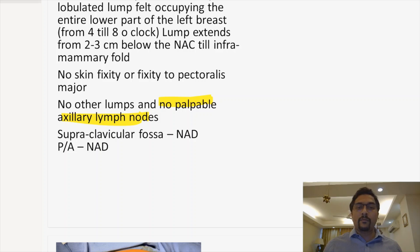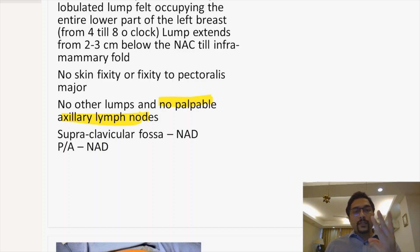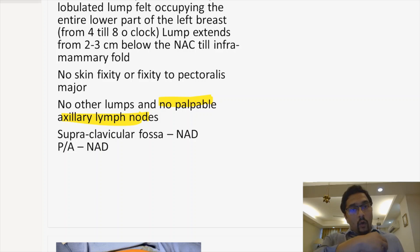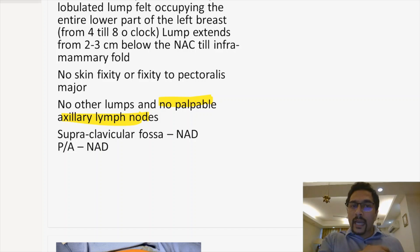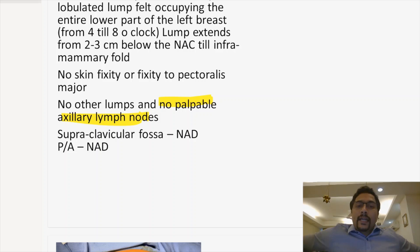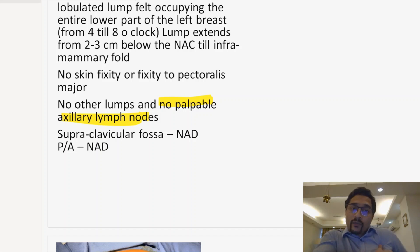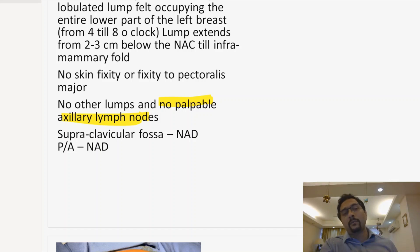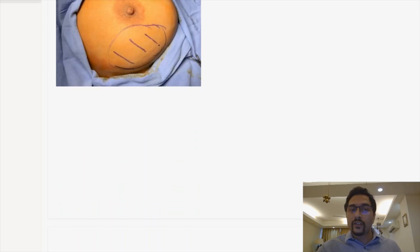How to demonstrate fixity to pectoralis major — your examiner asks this quite frequently. It's a three-step process. Step one: see if the lump is moving along the fibers of pectoralis major and perpendicular to the fibers. If it is moving in both axes, step two: ask the patient to make the muscle taut by placing hands on hips and pressing hard — feel that pectoralis major has become taut. Step three: again check movement along and perpendicular to the fibers. Restricted movement when the muscle is taut signifies fixity to pectoralis major.